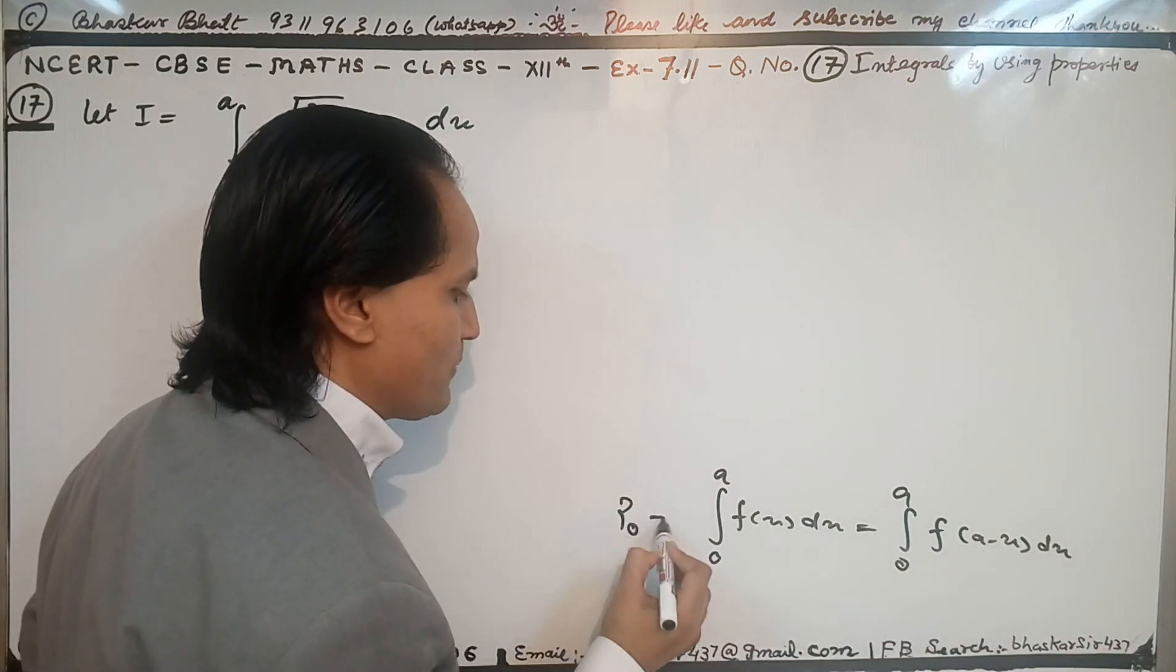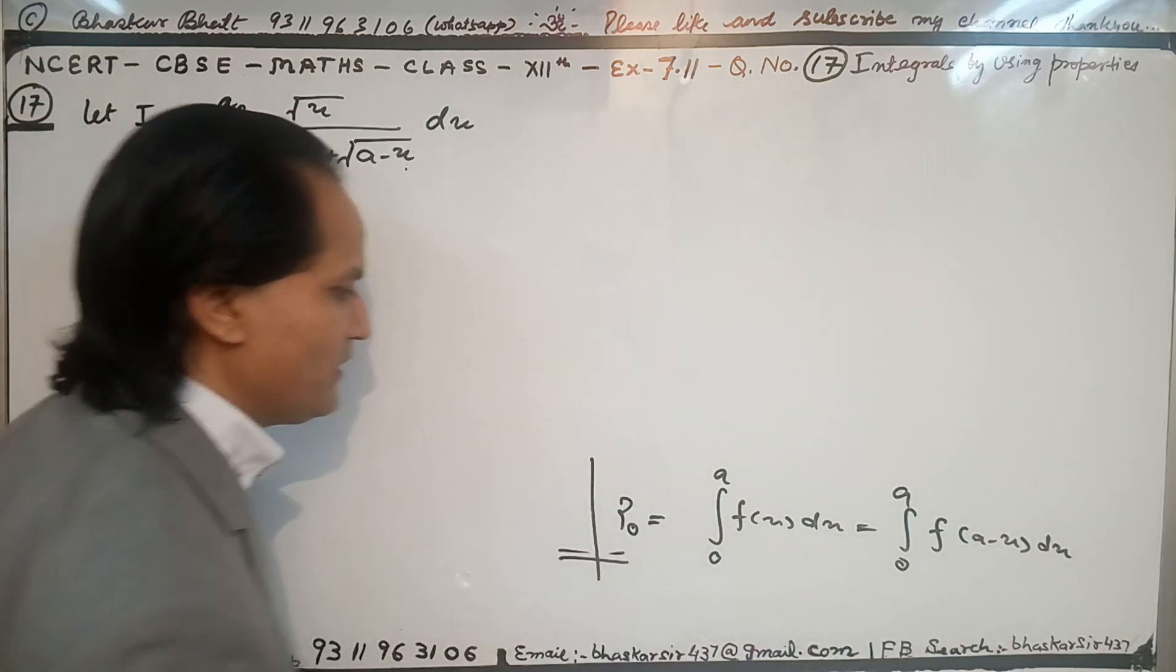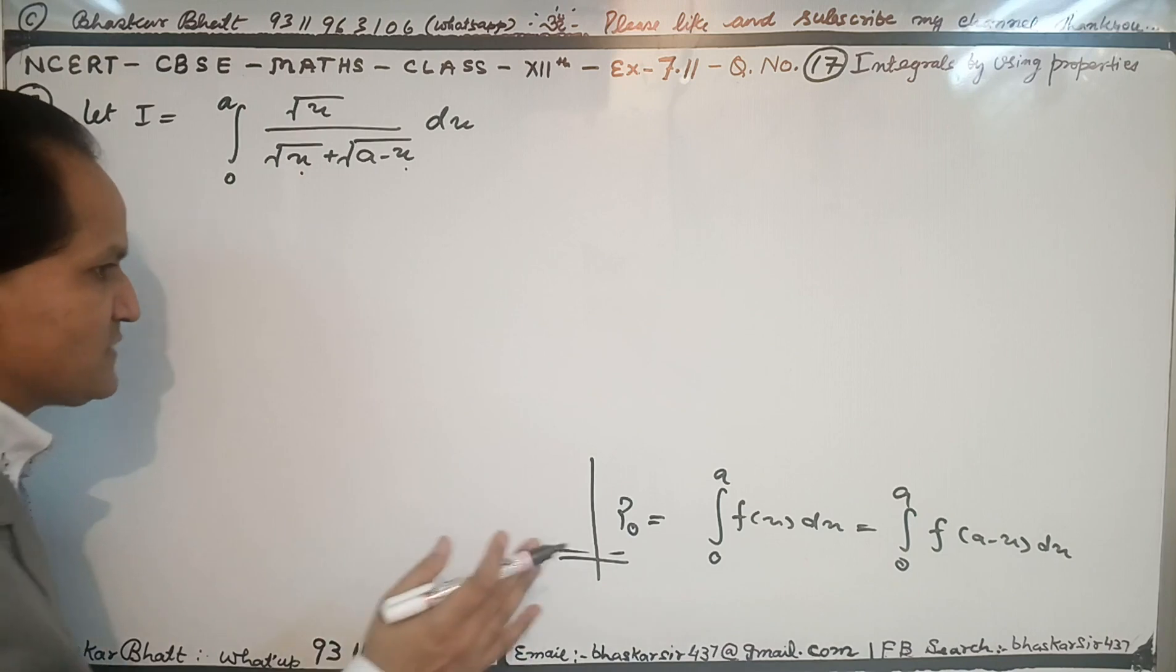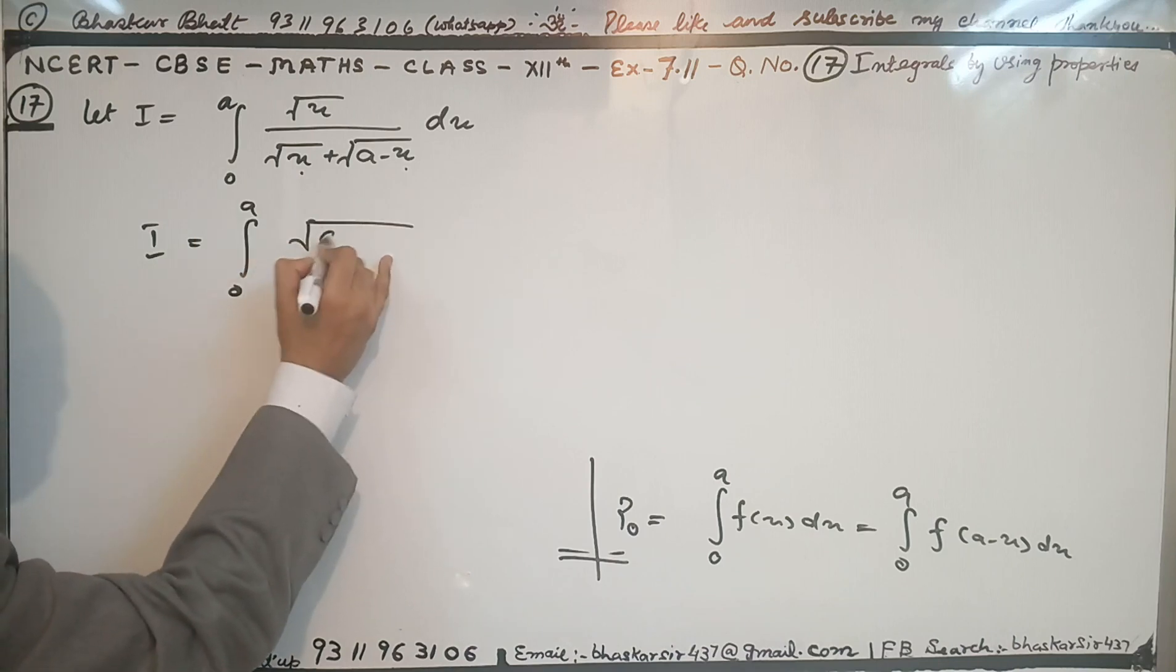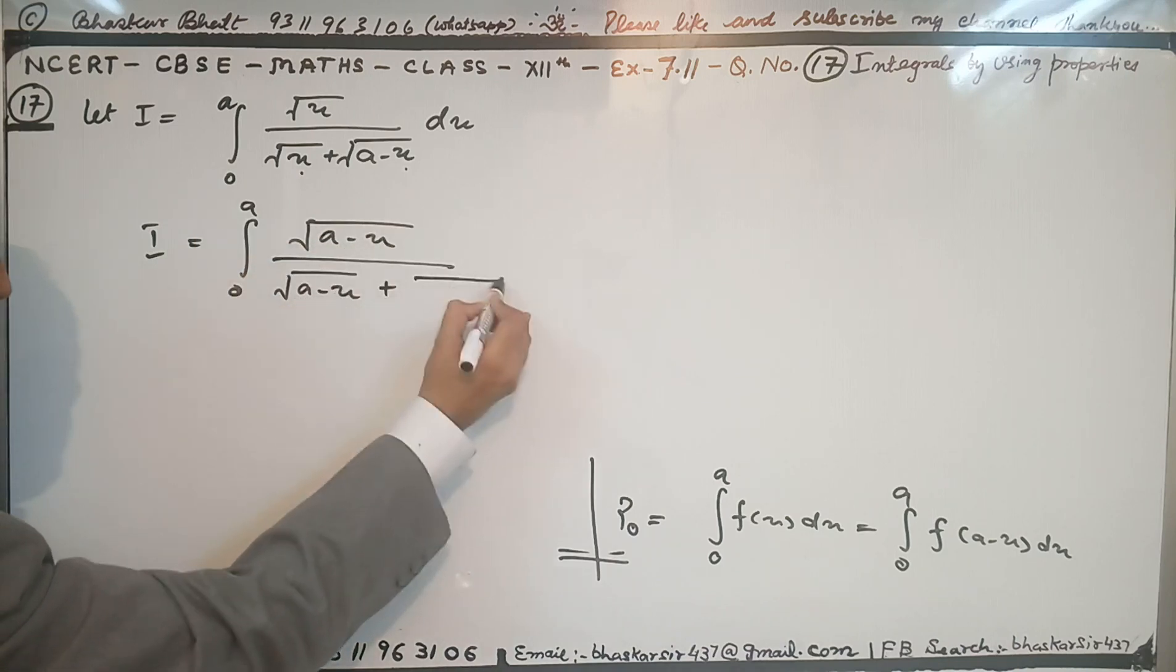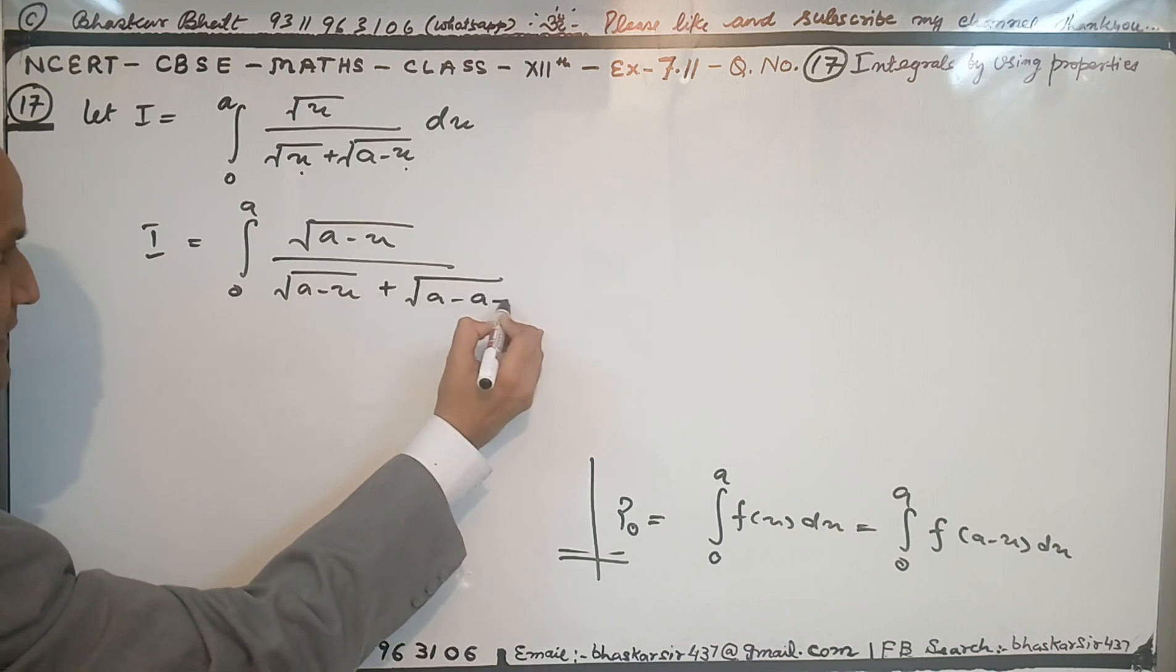This is the P0 property, the first and basic property of integration. I am using this property here in this question. I equal to from 0 to a, and a minus x, and a minus x plus a, the terms cancel.